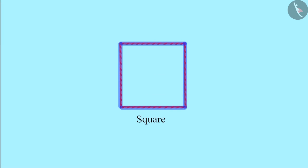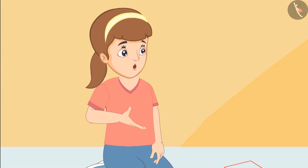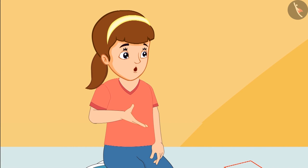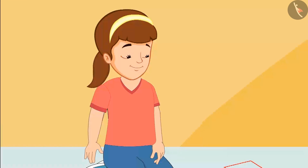Neha, we call this shape a square. Chotu, this shape is also made of four straws. Why is it a square then?